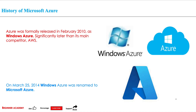On 25th March 2014, Windows Azure was renamed to its present name, Microsoft Azure. This is the history of Microsoft Azure.